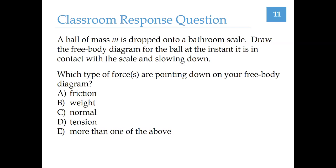Here's another question — pause the recording and submit your answer to Gradescope. There should be one downward force on your free body diagram, and that should be B, the weight force. There's a weight force that the Earth exerts on the ball — that's why the ball was falling down to begin with. That weight force would be there even if the ball were not accelerating. So the correct answer is B: the downward force on your free body diagram should be the weight force that the Earth exerts on the ball.